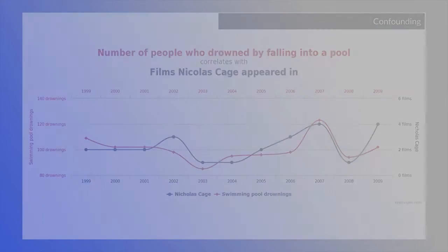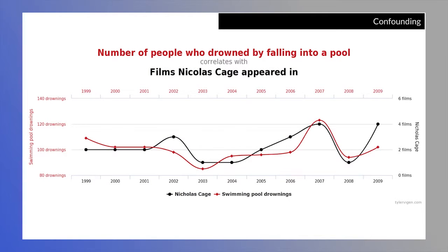Confounding is another core topic that occurs in observational data analysis. When you don't have randomization and you need to think about variables that can contaminate your results, you have to think about confounding. And here, Jeff came up with this funny example of the number of people who drowned by falling into a pool, how it correlated with films that Nicolas Cage appeared in.